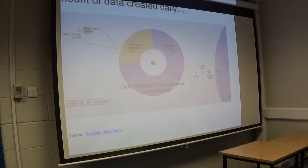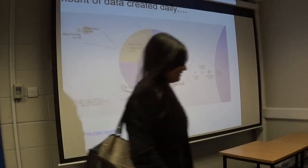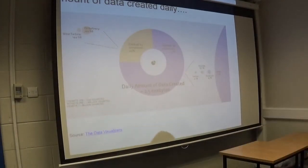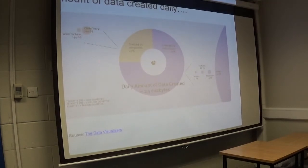So we have all this unstructured data — email — and then we have YouTube, Facebook, and Twitter, which generate smaller amounts of data. And the data generated by companies is actually not that great compared to the whole amount.